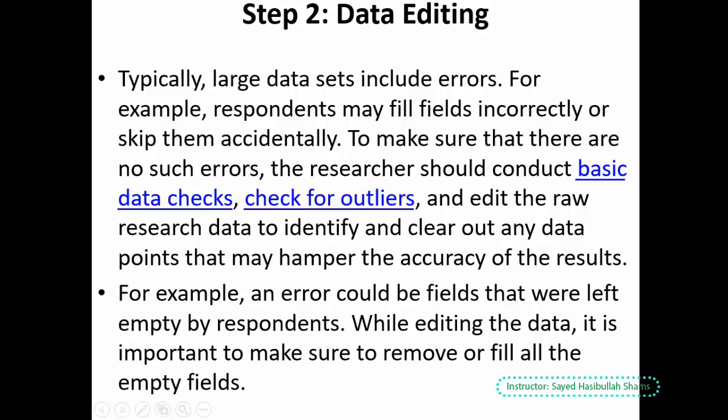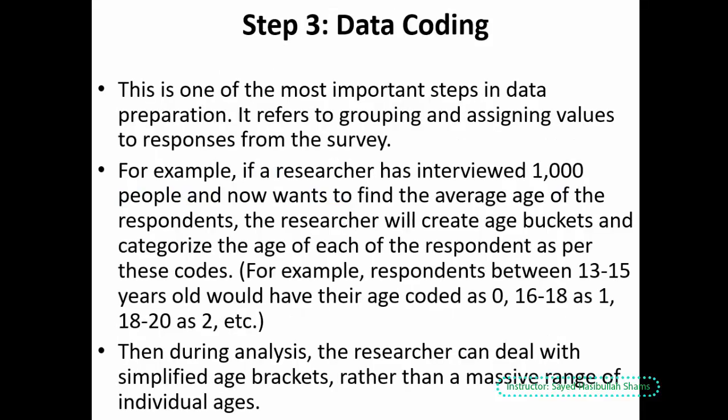Once we complete step 1, validation, we move to data editing. For the editing purpose, suppose we have blank data, some misspellings, or different problems in the data. We can revise the data and check for errors — for example, an outlier in the data. For this purpose we edit our data in step 2 to prepare it for the analysis process.